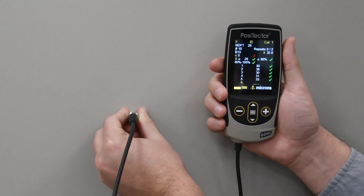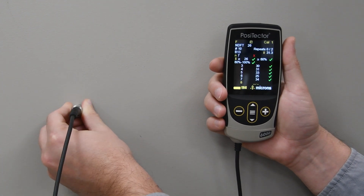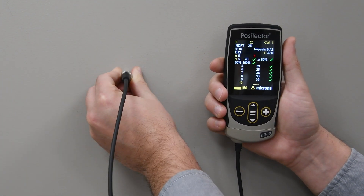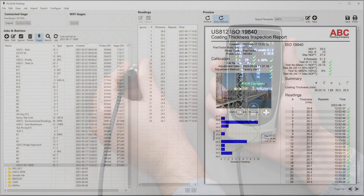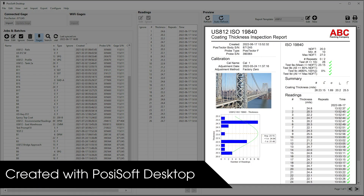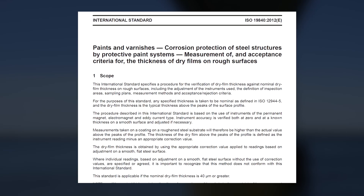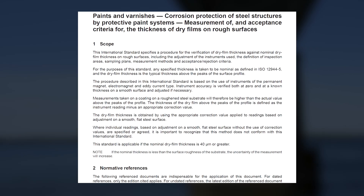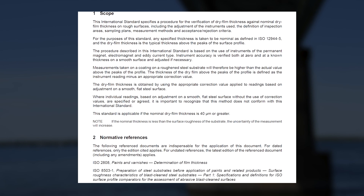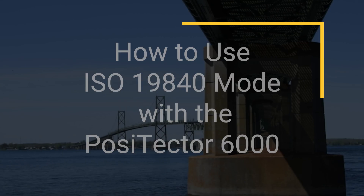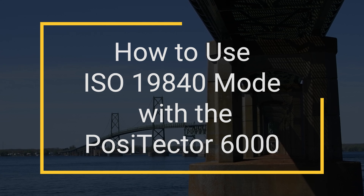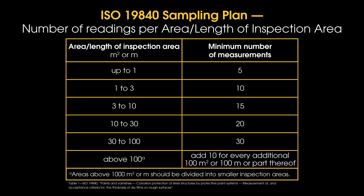ISO 19840 mode on the PosiTector 6000 makes the process easy by performing all necessary calculations on the gauge and creating pre-formatted reports with all required measurement data. Be sure to fully read and understand the ISO 19840 document prior to inspection. ISO 19840 specifies the required number of readings depending on the size of the area to be measured in each inspection area.